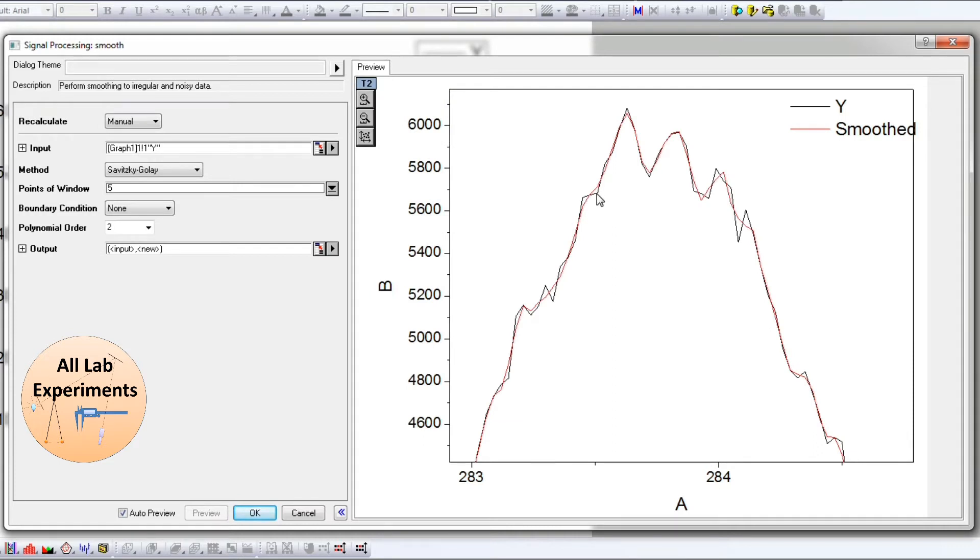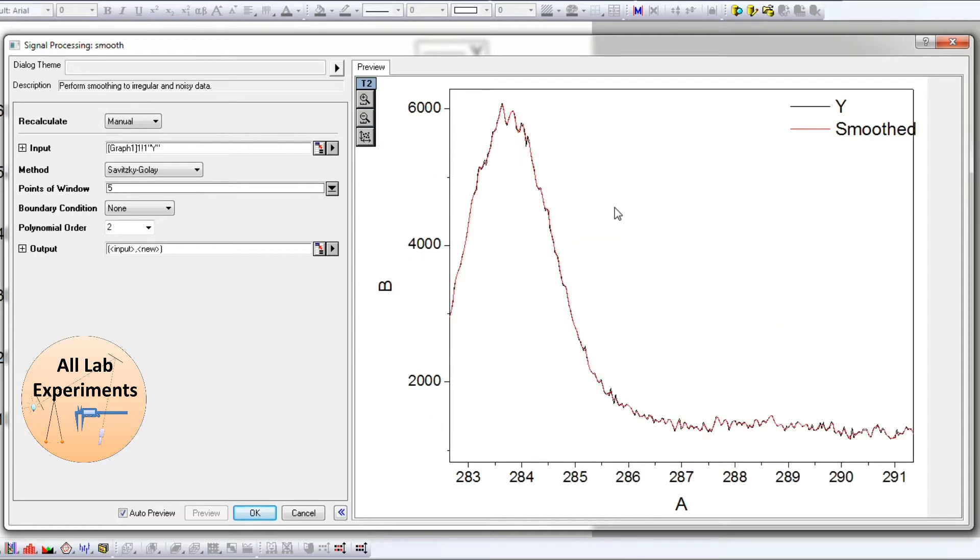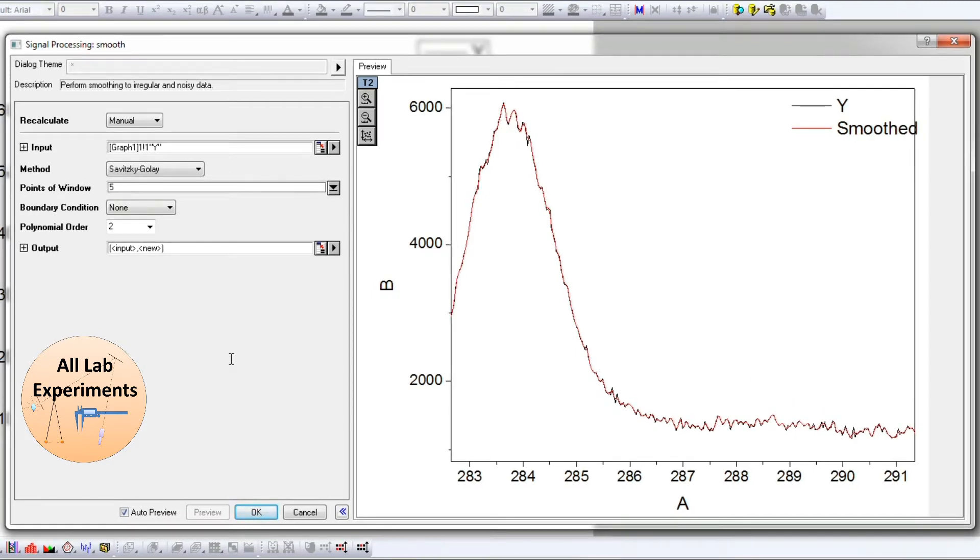Look at it closely. Here is one black line and one red line. The black line is the original data and the red line is the smooth data. You can consider two parts: one is this peak and another part is this section.